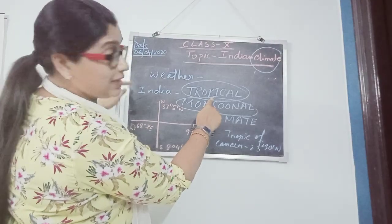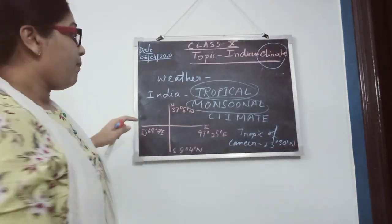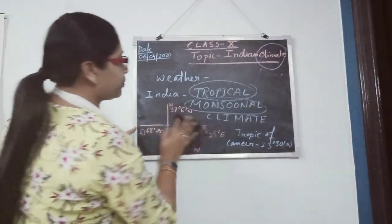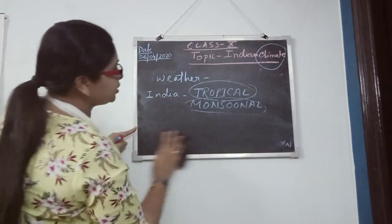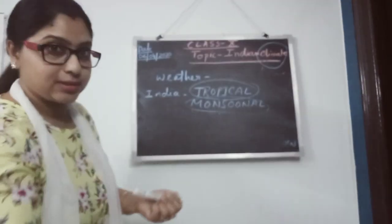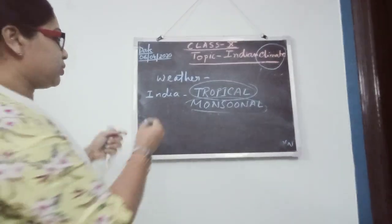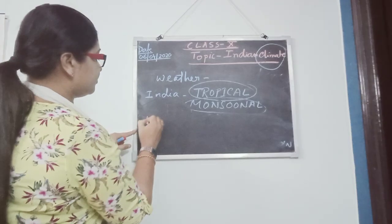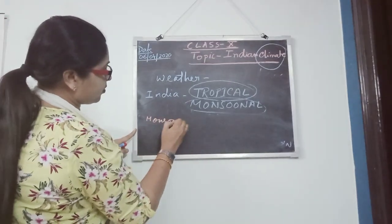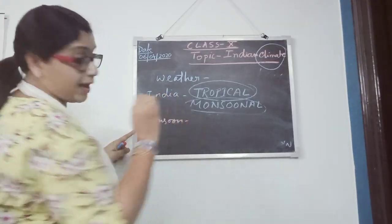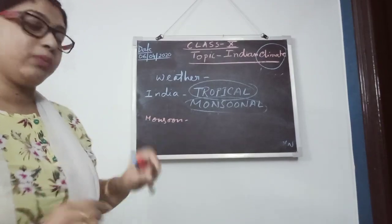So that is why India's climate is tropical monsoonal. Now how did the term monsoon come? The term monsoon has been derived from an Arabic word.